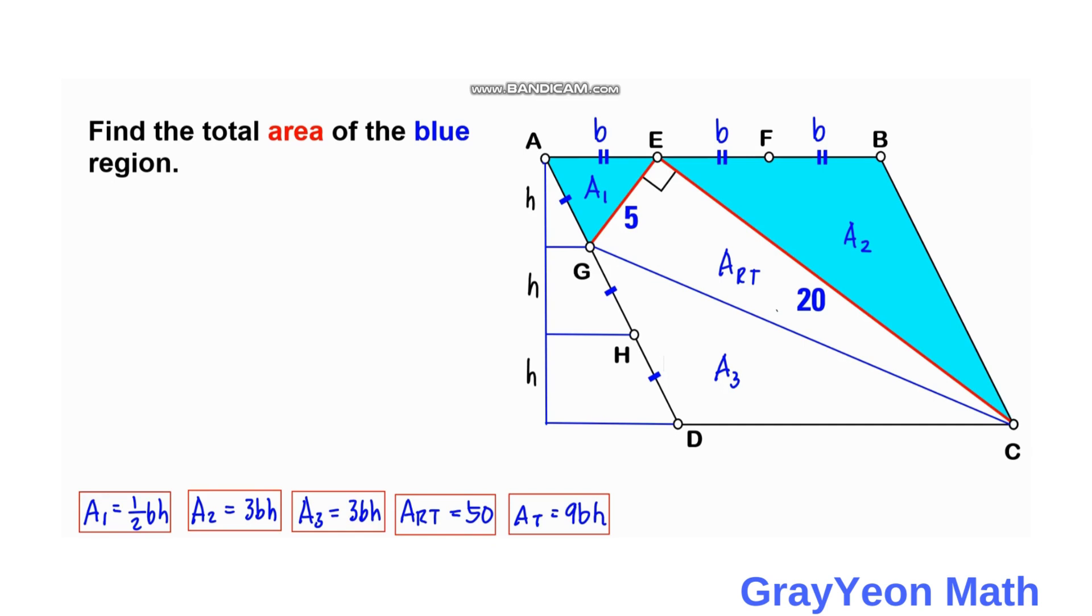So from this point on, we can actually write an equation about the total area of this parallelogram. So area total is equal to area 1 plus area 2 plus area 3 plus area of the right triangle.